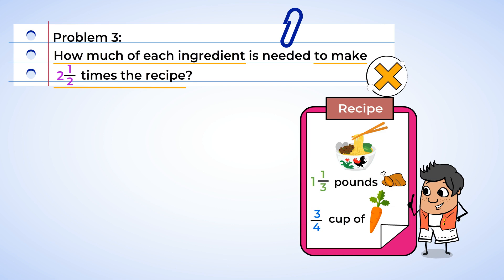To find the total amount of chicken, we're going to multiply 1 and 1 third and 2 and 1 half. Our first step is to change the mixed numbers to improper fractions. Multiply the denominator by the whole number before adding the numerator. 3 multiplied by 1 is 3. 3 plus 1 is 4. 1 and 1 third equals 4 thirds. Next fraction. 2 multiplied by 2 is 4. 4 plus 1 is 5. So 2 and 1 half is equal to 5 halves. Perfect!